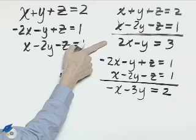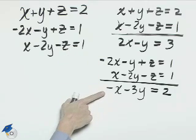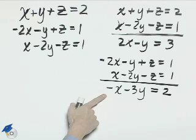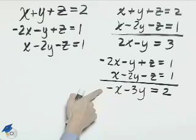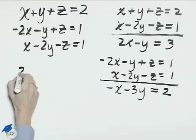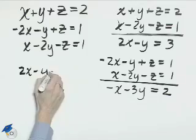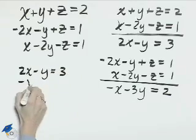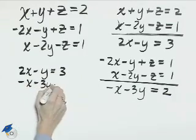Now these two equations, 2x minus y equals 3, and negative x minus 3y equals 2, we'll be able to put together to solve either for x or for y. We'll have 2x minus y equals 3, and negative x minus 3y equals 2.